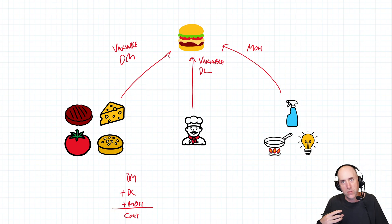are variable. We would definitely think of direct materials as being variable. Labor also is variable. The more burgers we make, the more chef's wages we have to pay. Overhead, however, is a mix of variable and fixed costs. Overhead contains things like